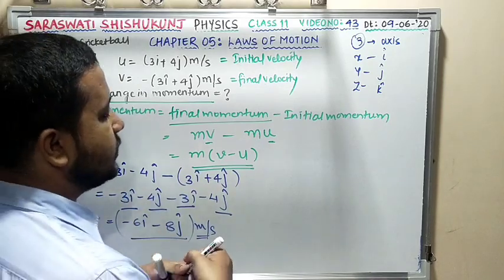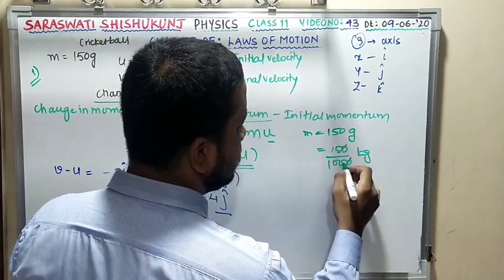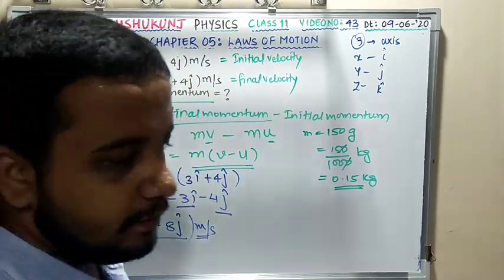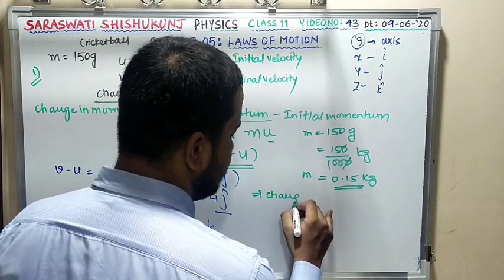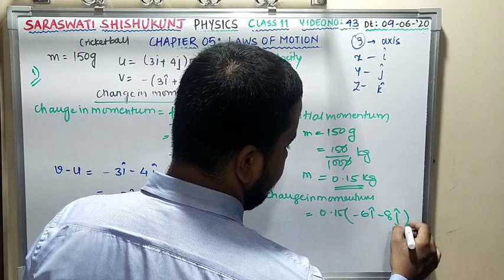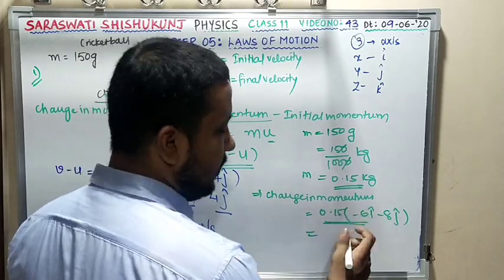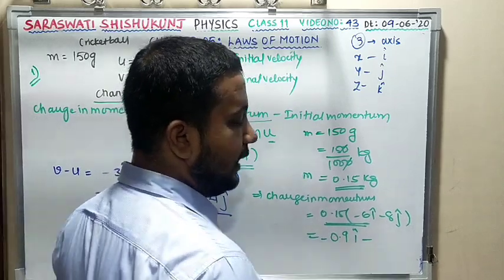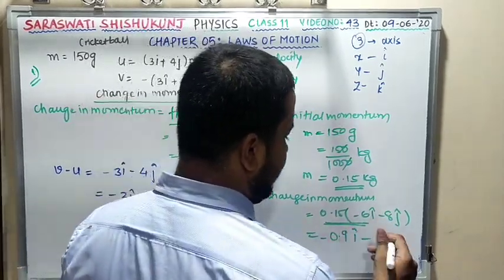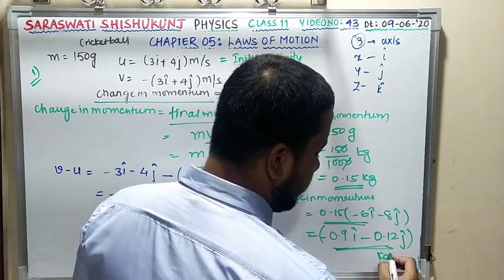Mass = 150 g = 0.15 kg. Change in momentum = 0.15 × (−6î − 8ĵ) = −0.9î − 1.2ĵ kg·m/s. This is the vector form of the change in momentum.